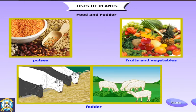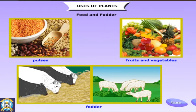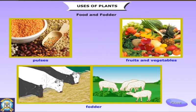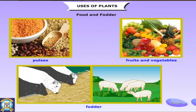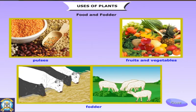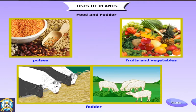Fodder, or animal feed, is any agricultural foodstuff used specifically to feed domesticated livestock such as cattle, goats, sheep, horses, chickens and pigs.